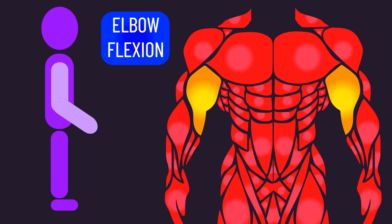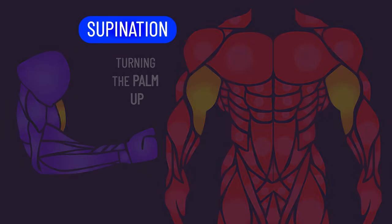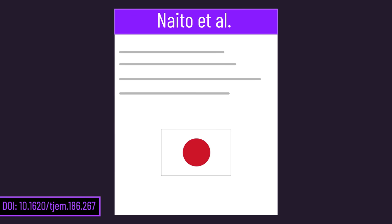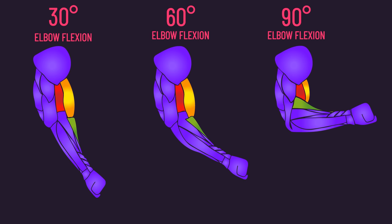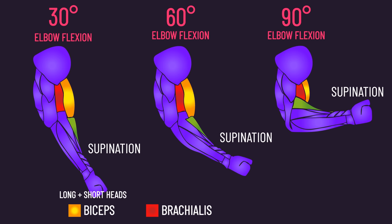Elbow flexion is carried out by the biceps, but the other predominant function is supination of the forearm. Supinating the forearm while simultaneously performing elbow flexion powerfully activates the biceps. A 1998 paper from Japan illustrates this — researchers had subjects hold a contraction at 30, 60, and 90 degrees of elbow flexion, and in each position had them transition their grip from pronated to supinated, while fine-wire electrodes recorded activity of the biceps' long and short heads, as well as the brachialis and brachioradialis.